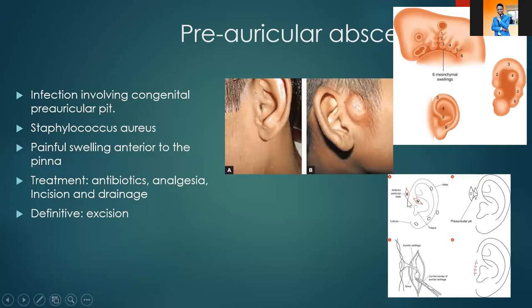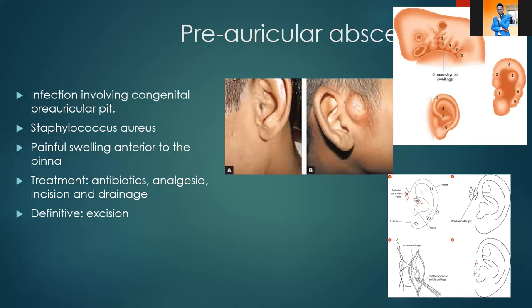There are many different locations where the pits can be formed, but commonly we have a pit found anterior to the root of the helix. It can also occur at the concha or at the tragus — anywhere along where the hillocks were fusing. Usually we have seen patients with preauricular pits and we don't do anything about them. Some people even say these pits run in their family.